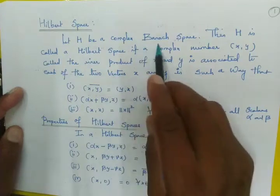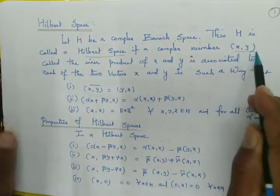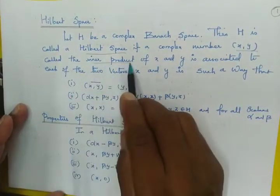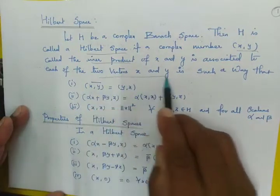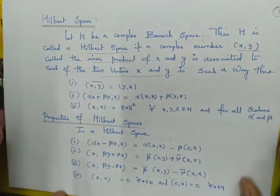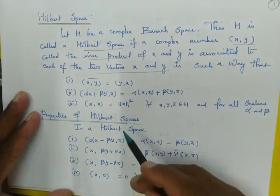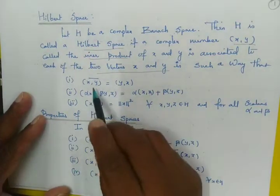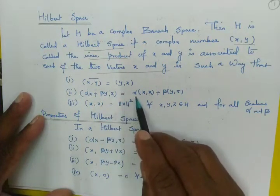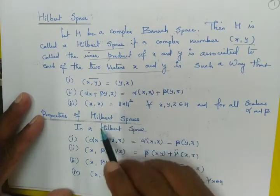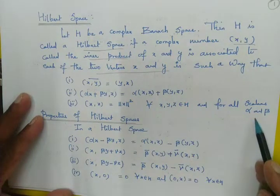Let H be a complex Banach space. Then H is called a Hilbert space if a complex number, the inner product of x and y, is associated to each pair of vectors x and y satisfying: (1) the inner product (x, y) bar equals (y, x); (2) (αx + βy, z) = α(x, z) + β(y, z); (3) (x, x) equals the norm of x squared, for all x, y, z in H and all scalars α and β.